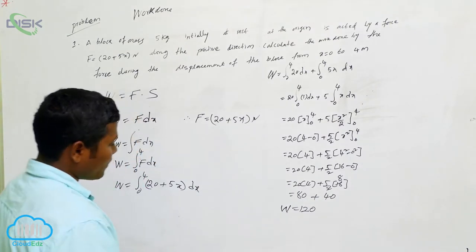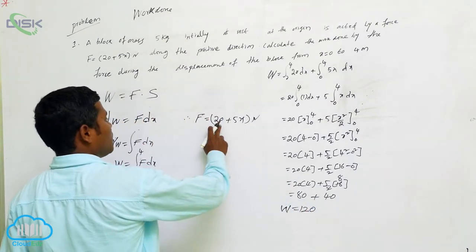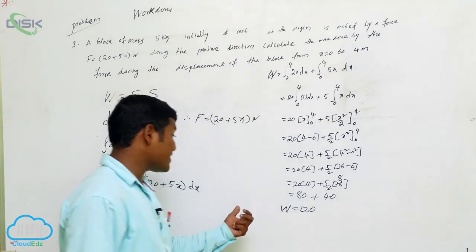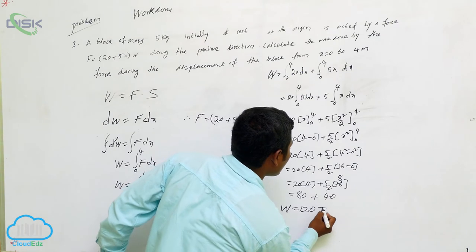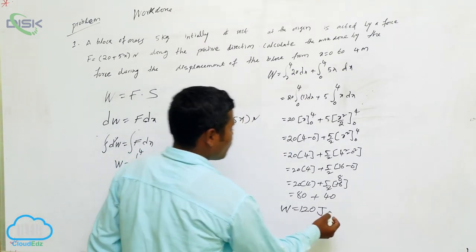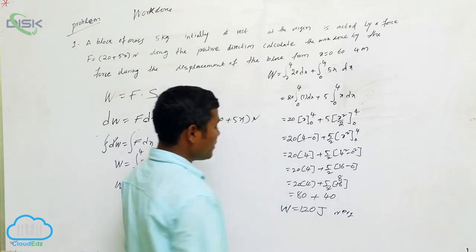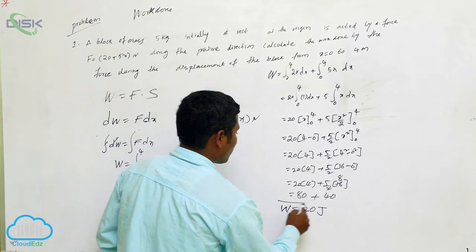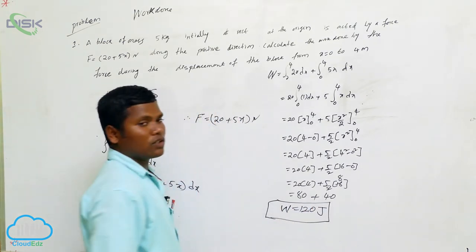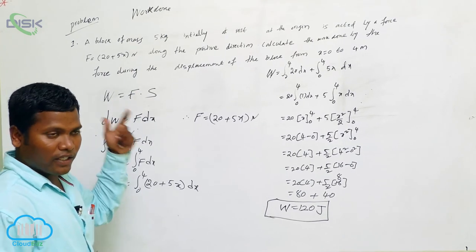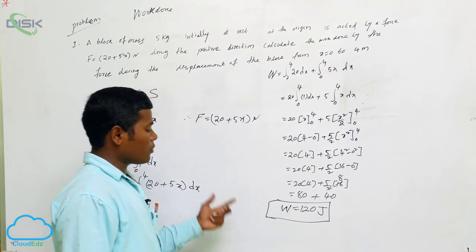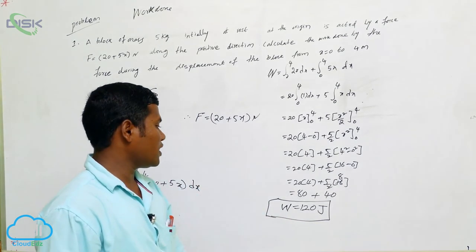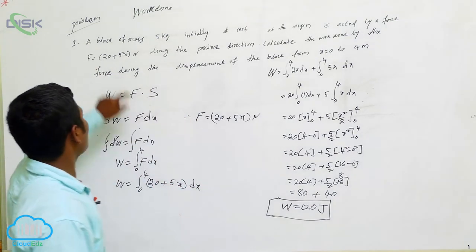After getting the answer, we must always include the unit. Since the force was given in Newtons (MKS system), the unit of work is Joules — not ergs. So the total work done is 120 Joules. Remember: after getting the answer, always mention the measurement unit. Solve more problems based on this principle.